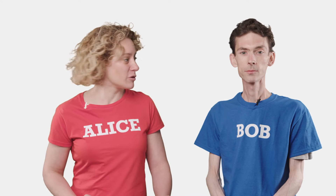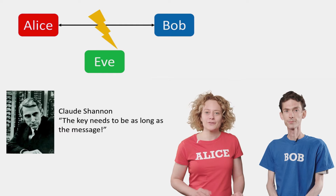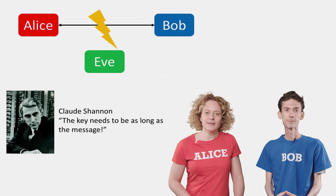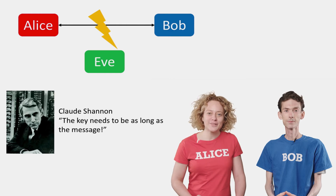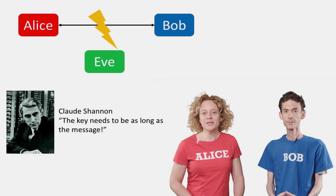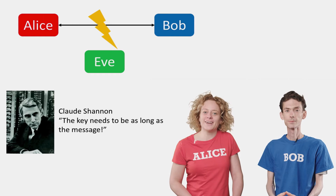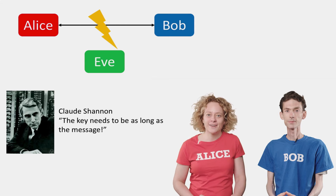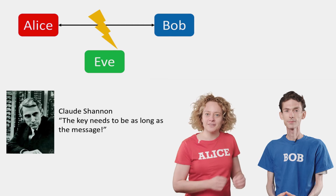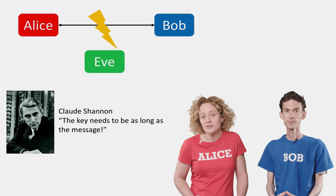So this key is very important to their security. How much key do we need to protect our messages? Shannon has already shown a long time ago that in order to achieve absolute security, the key needs to be just as long as the message. If I send a one megabyte picture to Bob, we need to share one megabyte of key, and we can never use this key again. So there's a chicken-and-egg problem: we want to exchange a secret — the message — but we need to start with a secret just as long as the message — the key.